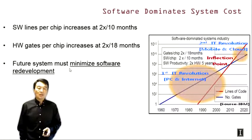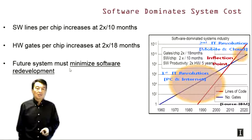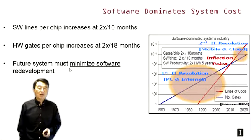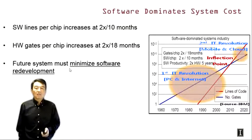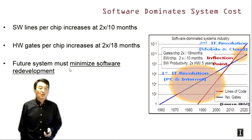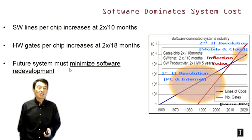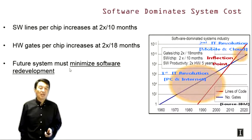This slide shows data that was published by IBM in 2010. This graph shows that hardware costs and software costs have both been growing exponentially over the years. This is a log plot, so a linear curve in this plot is an exponential curve. The software cost is measured by lines per chip, and the hardware cost is measured by gates per chip.